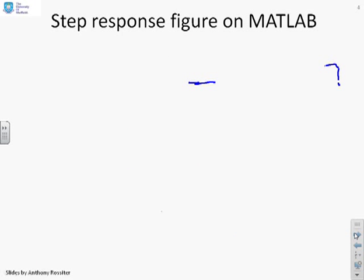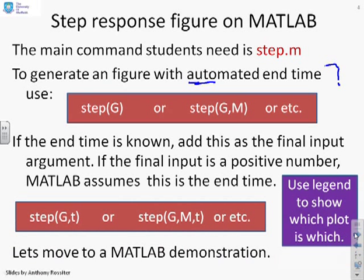So the question we want to ask is how do we get a figure for the step response using MATLAB? Okay, so we're going to use step.m and there's a number of different options. If we want to generate a figure with an automated end time, which means we're going to allow MATLAB to choose the end time for us, and it will do that by looking at the transfer function and making an estimate of how long is needed to show the principal dynamics, then you just do something like step(G) or step(G,M). Now the difference is step(G) will show the step response for G. Step(G,M) will show the step responses for G and M and it will overlay them together. Or indeed you could do step(G,M,K) and so on.